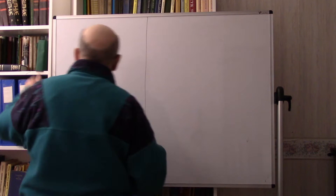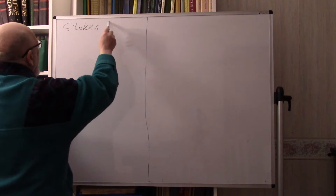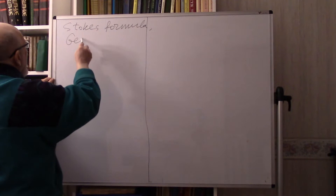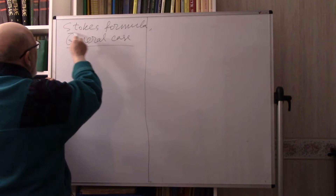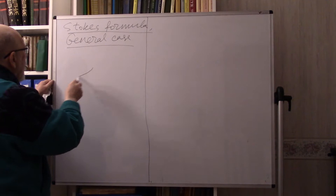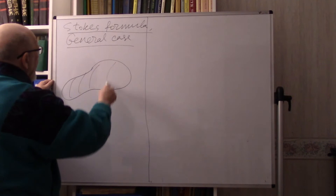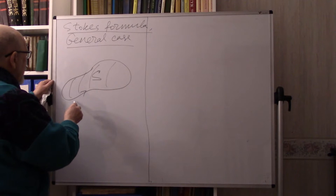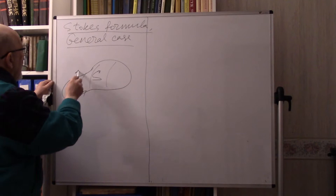Stokes formula — general case. Suppose we have a surface. Let me draw this surface like this, S, with this contour C, and this is the normal vector N.